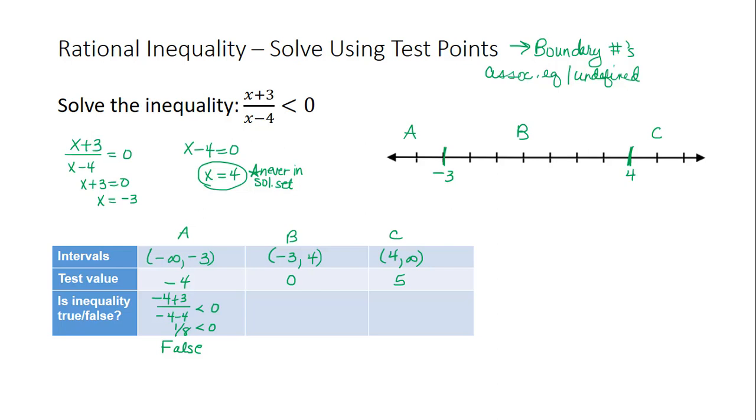When I substitute 0 in for x, I get 0 plus 3 divided by the expression 0 minus 4. Is that less than 0? Yes, that becomes negative 3 fourths, which is less than 0. So that is true.